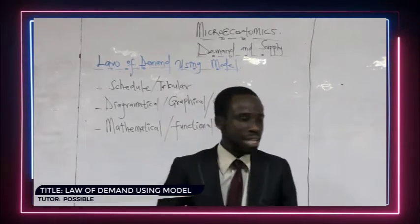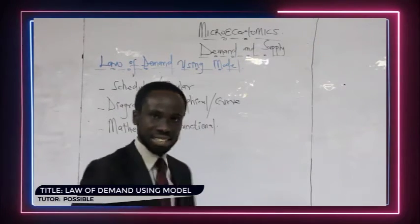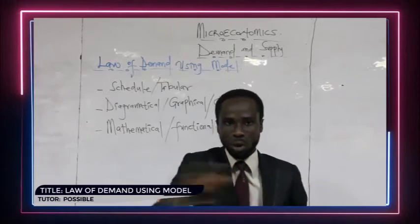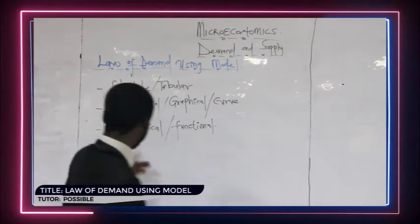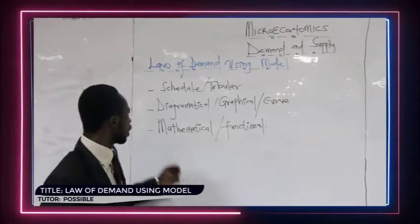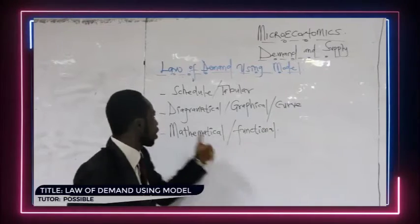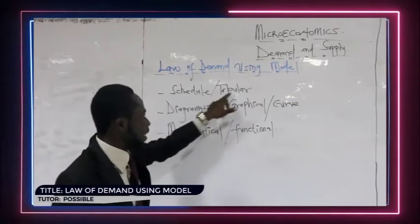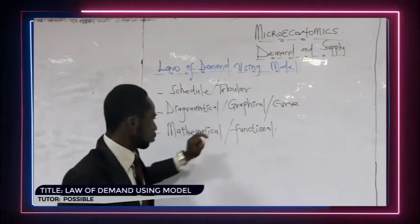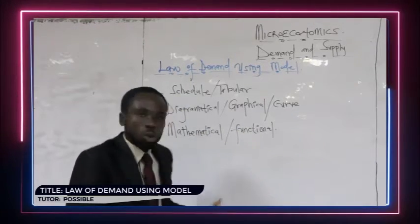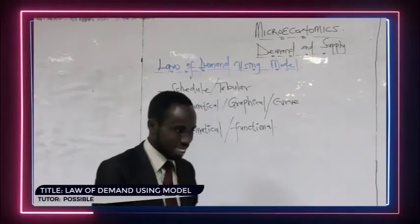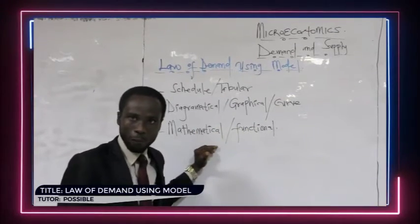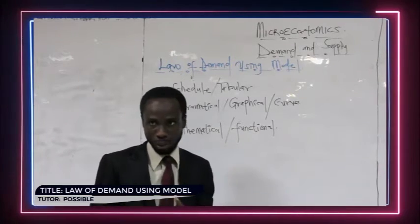Sometimes they say 'with the aid of a table or mathematical function,' or they even place a mathematical equation or formula for you to solve — that is the mathematical or functional representation. Diagrammatic is with the aid of a diagram or curve, and tabular is with the aid of a table. So the model is a tabular, diagrammatic, or mathematical representation of economic theory. I hope you can see the difference between the model and the theory.